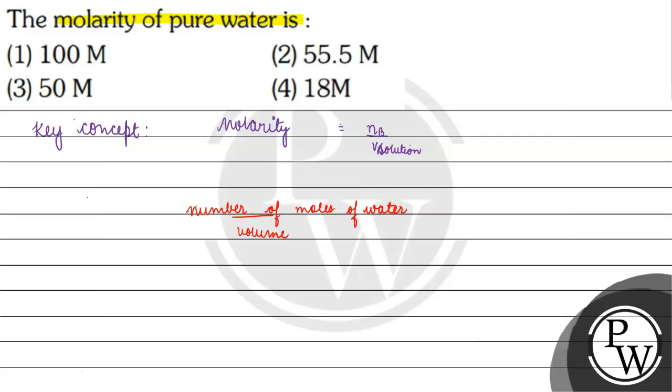Let the mass of water be 1000 grams. Then, moles of water equals 1000 grams divided by 18 grams per mole.